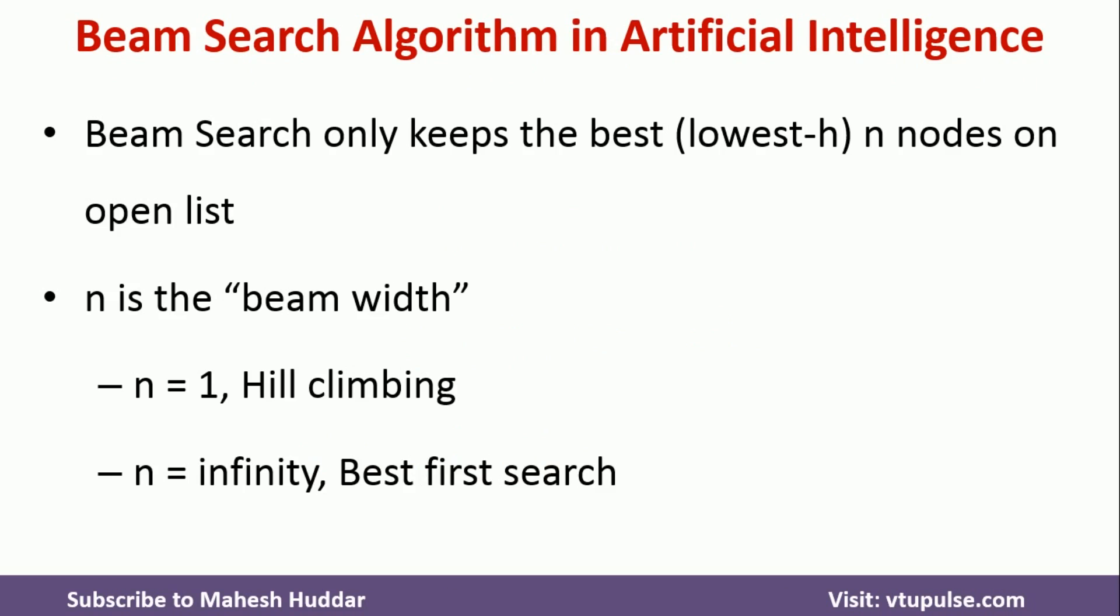Beam Search algorithm only keeps the best N nodes on the open list. What actually happens in other algorithms or other search techniques is they will consider all the successors of the current node and everything will be placed into the open list. But in Beam Search algorithm, only N nodes are kept on open list.